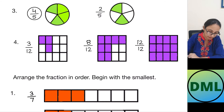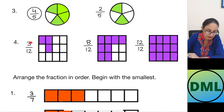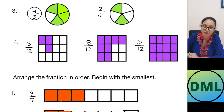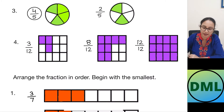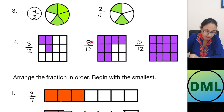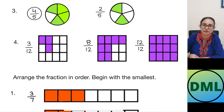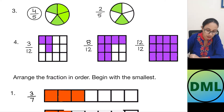Let's see one more example. In this fraction it is 3 by 12 — out of 12 parts, 3 parts are shaded. Here 8 by 12 — out of 12 parts, 8 parts are shaded. Here it is 12 by 12 — out of 12 parts, all 12 parts are shaded. Now I look for my denominator — it is 12. Now I look for my numerators: 3, 8 and 12. Which one is bigger? 12. So 12 over 12 is my greatest fraction.